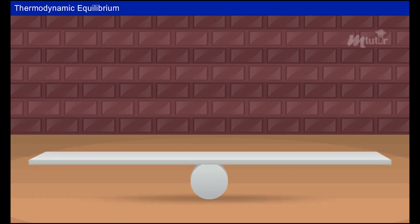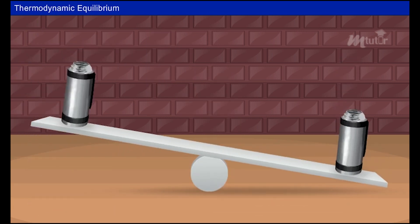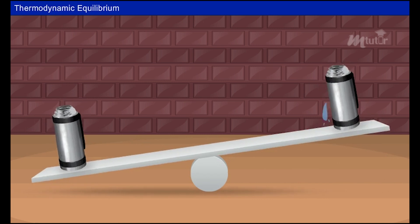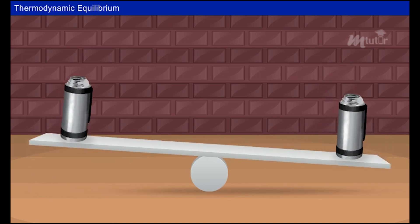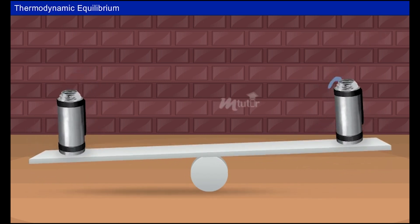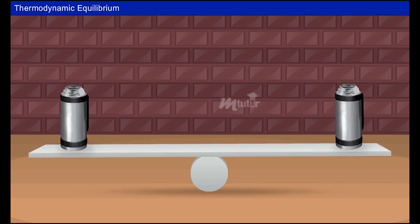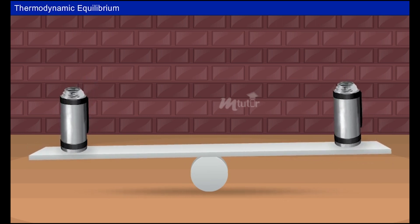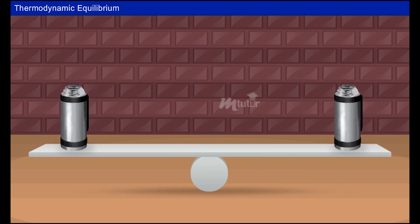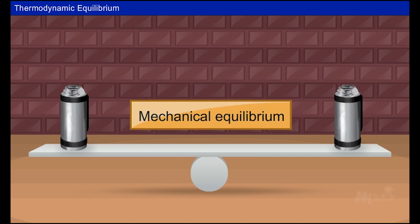When we place two identical objects on a seesaw, after some time they will be in a balanced position. Here there is no unbalanced force in the seesaw, hence the seesaw is in mechanical equilibrium.